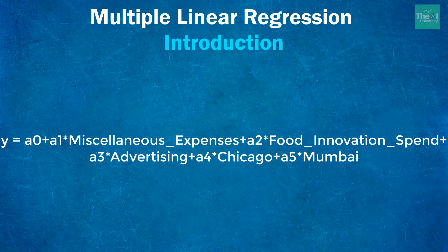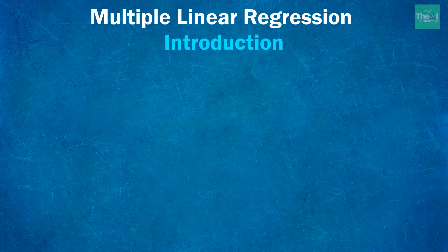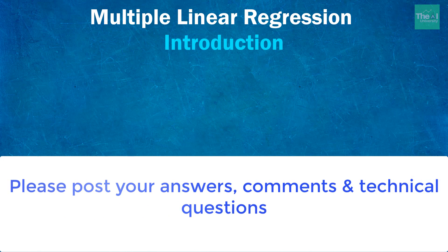So folks, that's it for this video. To conclude, I explained multiple linear regression and the intuition behind it, certain assumptions we need to take, the dataset associated with it, and the problem statement where we predict the profit for a restaurant opening in a particular city. Here is a question: if you have created 17 dummy variables for building a multiple linear regression model, how many dummy variables will you include in your multiple linear regression equation? Please post your answers in the comment section below.